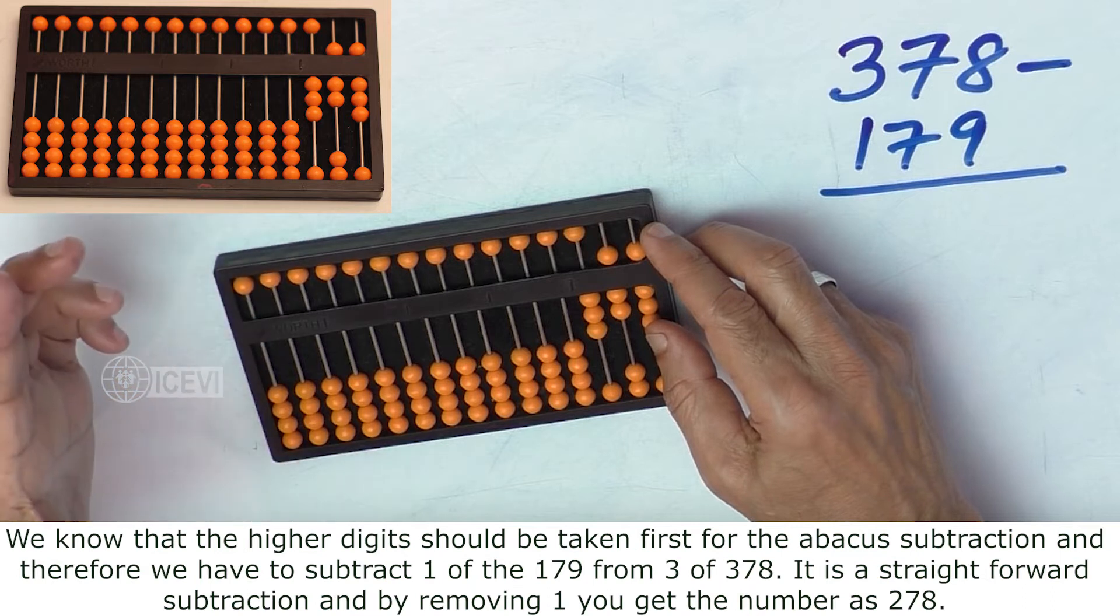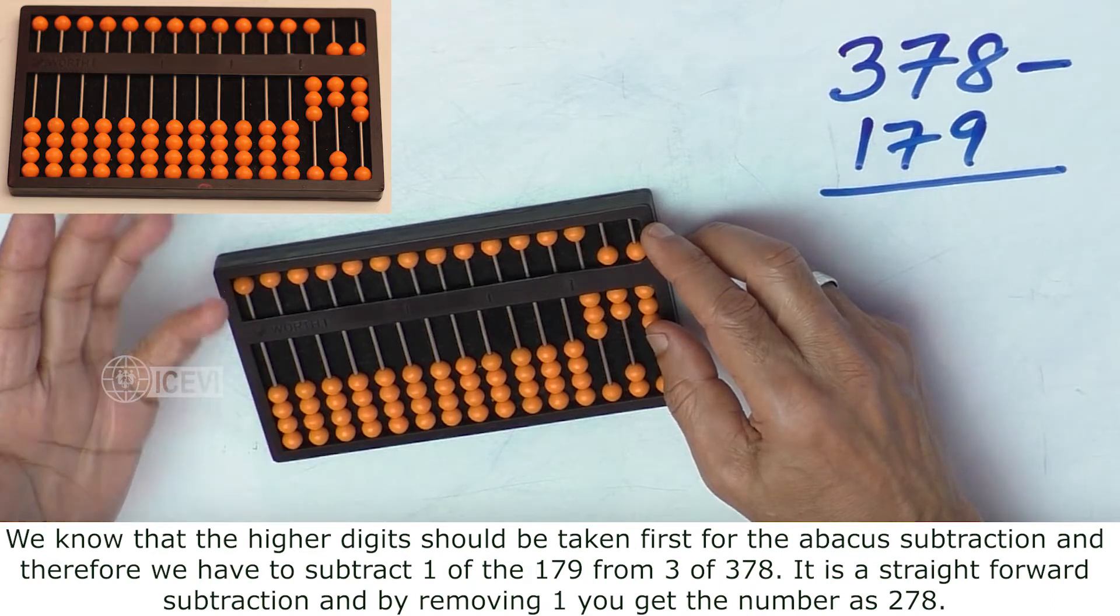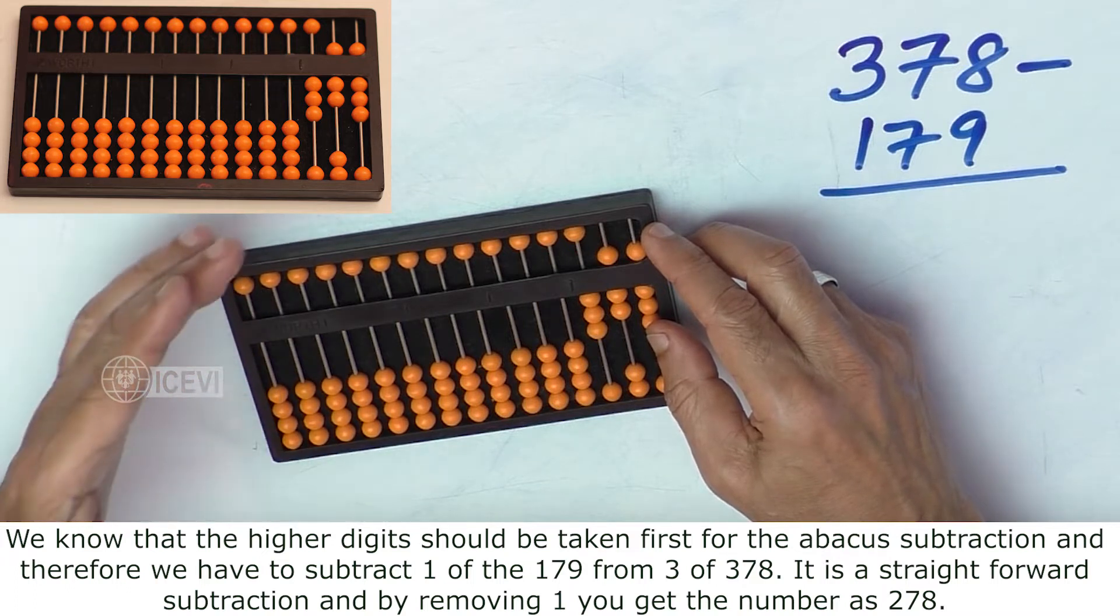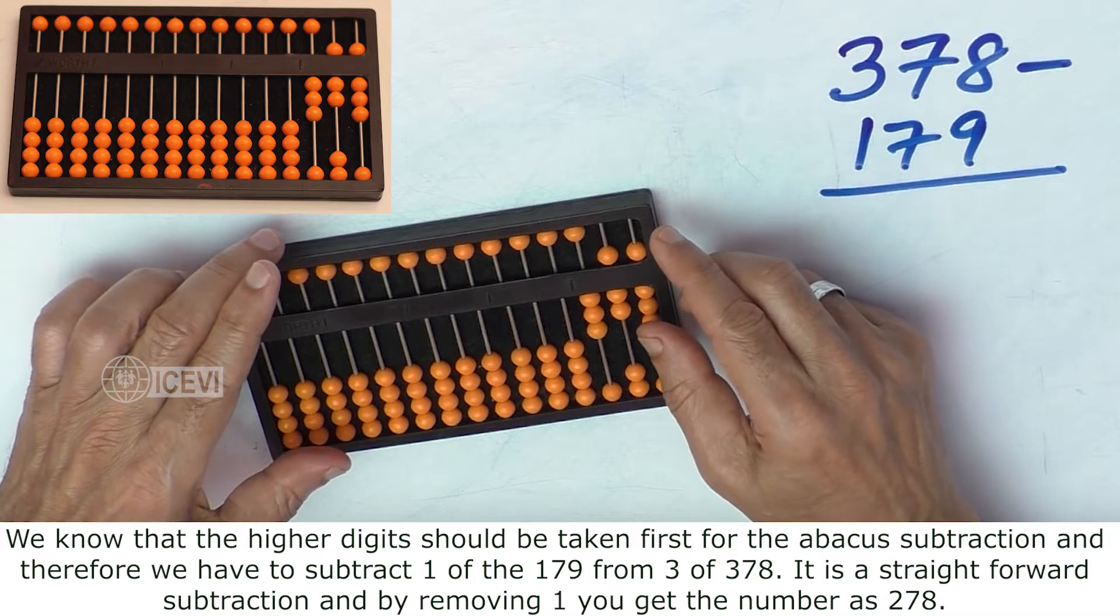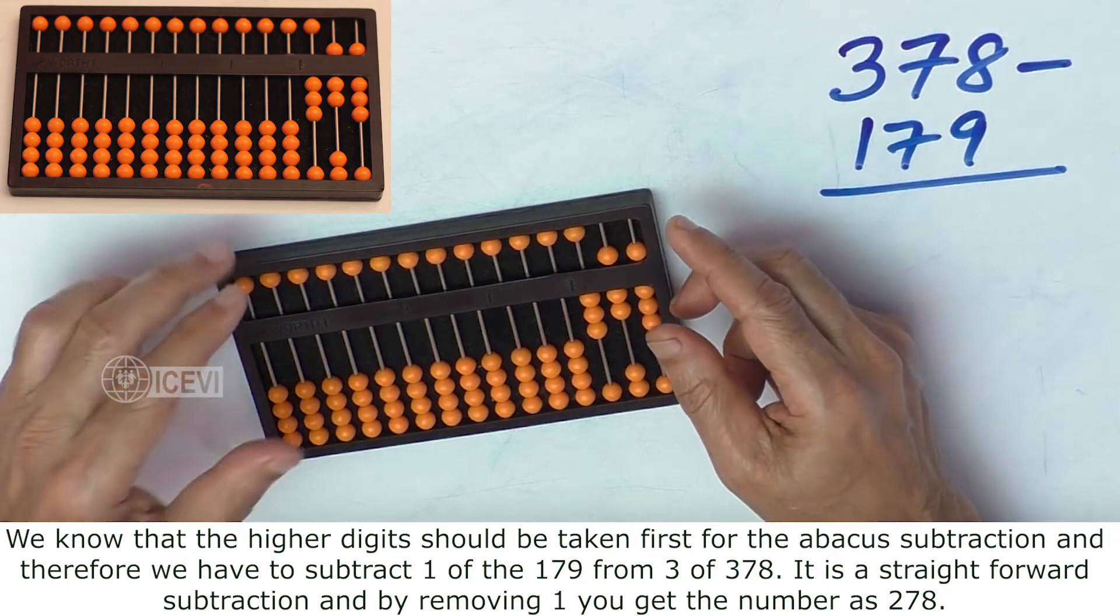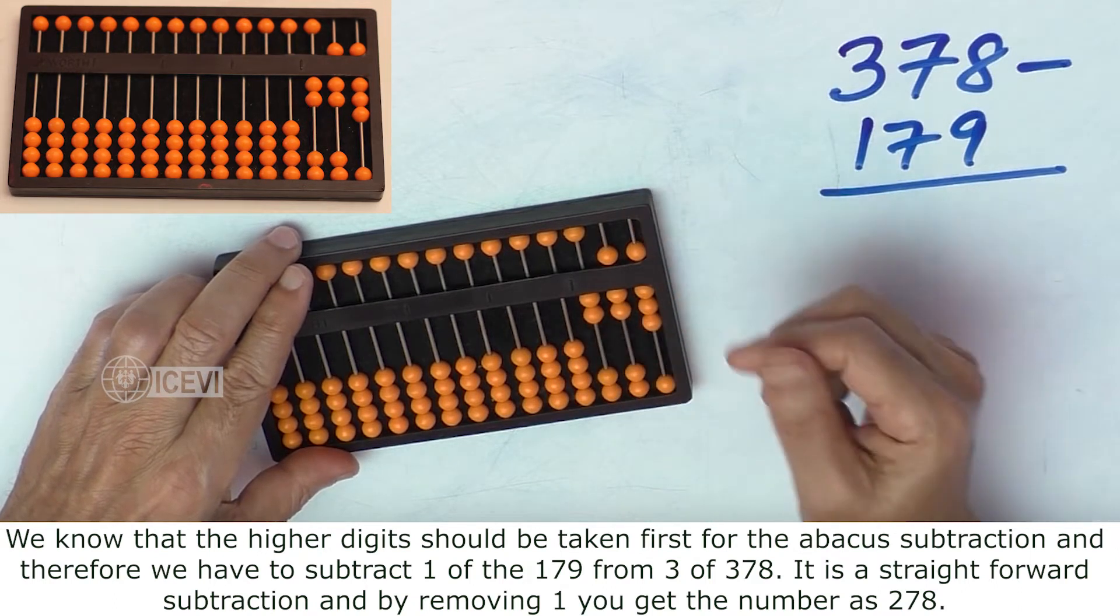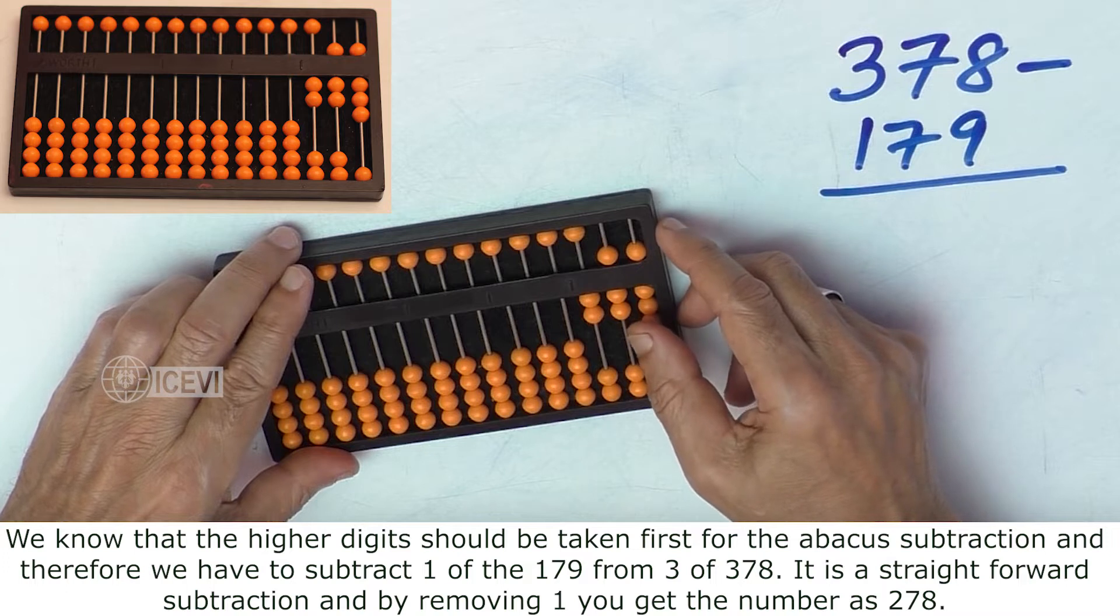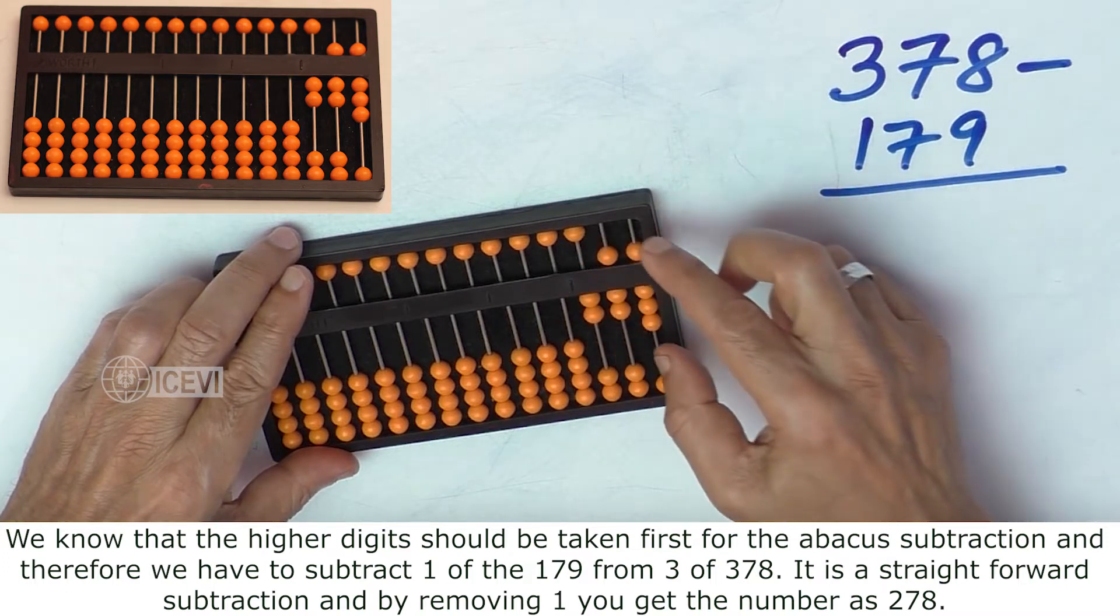We know that the higher digits should be taken first for the abacus subtraction, and therefore we have to subtract 1 of 179 from 3 of 378. It is a straightforward subtraction and by removing 1, you get the number in the first stage, that is 278.